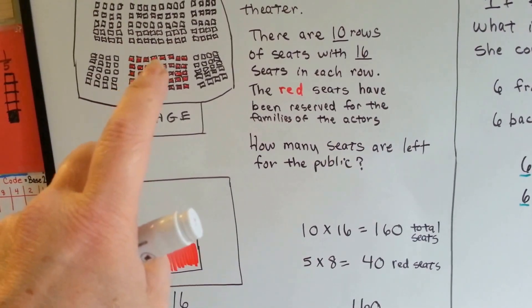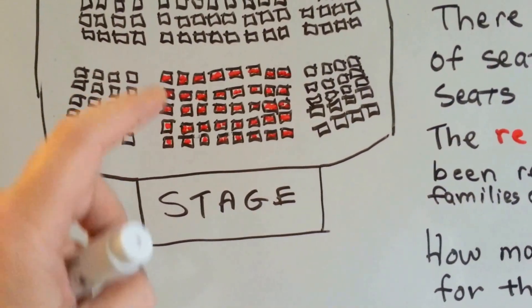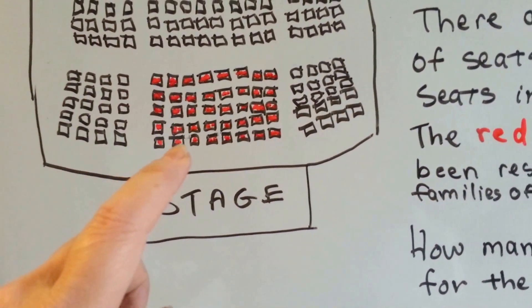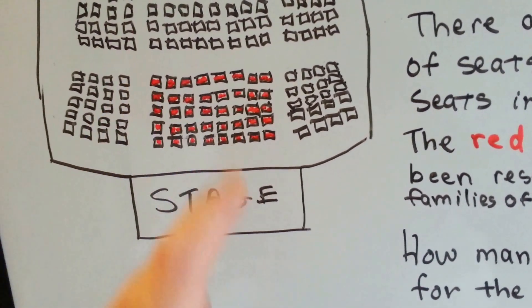Then we need to find out how many of the seats are red. Well, here's five going this way and one, two, three, four, five, six, seven, eight going this way. So we have five times eight.